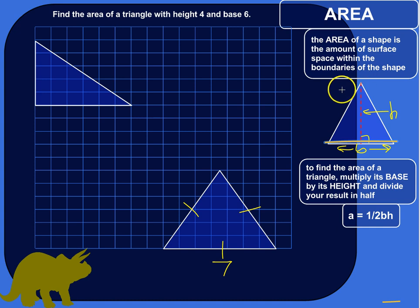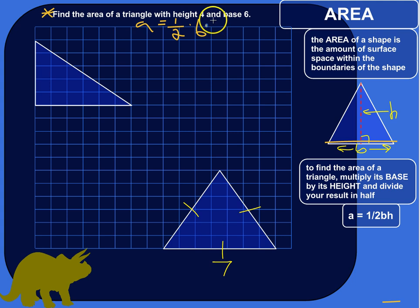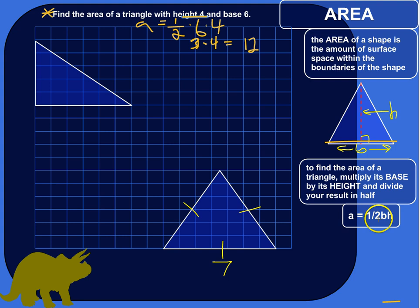A lot of times you don't need to think too much about height and base. For example, if they just say find the area of a triangle with height 4 and base 6, you just follow the formula. Area equals one half times base times height, so one half times 6 times 4: one half of 6 is 3, times 4 equals 12 — 12 units squared.